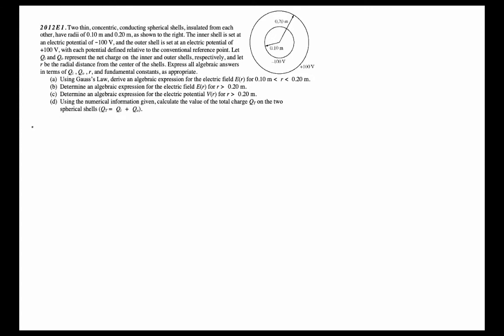Here we have the Physics C Electricity and Magnetism problem from 2002. Two thin concentric conducting spherical shells, insulated from each other, have radii of 0.1 meters and 0.2 meters as shown on the right. The inner shell is set at an electric potential of negative 100 volts and the outer shell is set at an electric potential of 100 volts, with each potential defined relative to the conventional reference point.